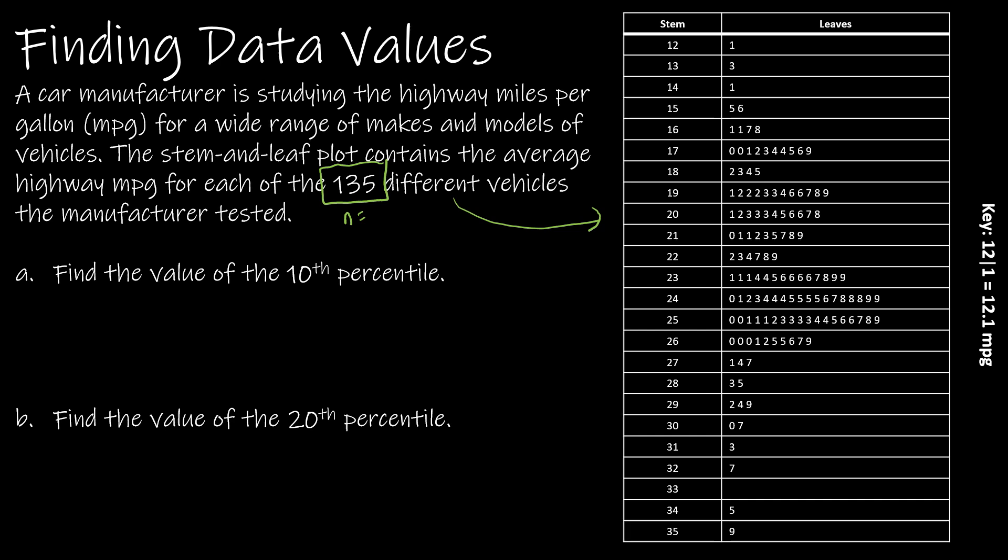Now if I'm trying to find the tenth percentile, I'm going to put 10 over 100, or you can also just write it as 0.10. So I'm going to take 135, which is n, times 10 over 100 or times 0.10. Whichever way I do it, I get 13.5. Now remember it says if you end up with a decimal, round up. So we end up with 14. So here's what that means: I want to find the 14th value in my data.